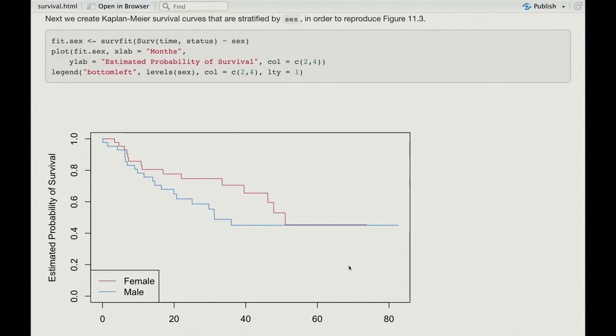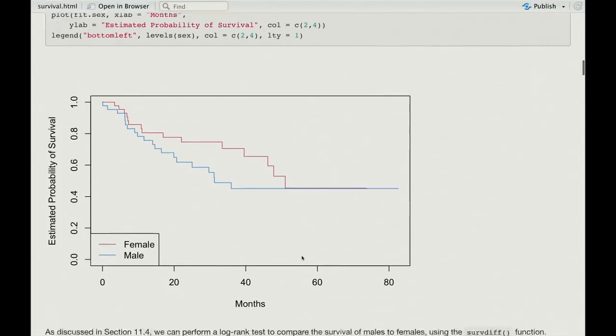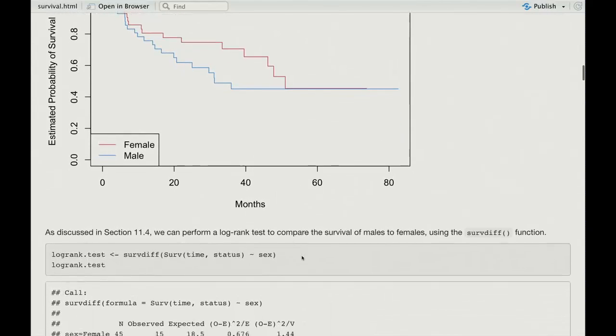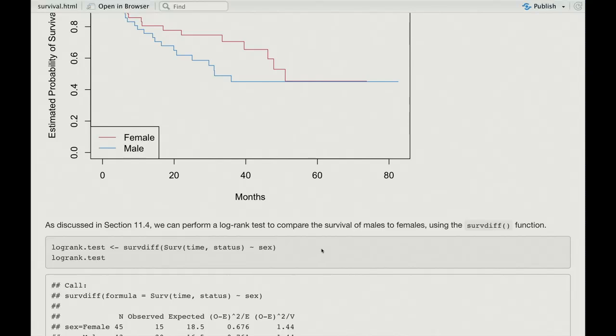But you can add them if you want. And so you can see if you can figure out how to do that by looking at the survfit function and the plot method. And one of the questions we're going to ask pretty soon is, are these two different? They look to be somewhat different around 40 months, for example. But, of course, there's variation here, and it's a small data set. So we'll have to do a proper test. Right. So it looks like men are doing a bit worse than women.